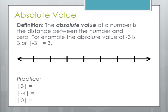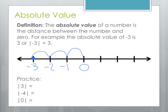Now let's introduce the concept of absolute value. Absolute value is the distance a number is from 0. The absolute value of negative 3 is 3, and we use vertical lines to show the absolute value symbol. If we plot this on the number line at negative 3, and count the distance from 0, that's 1, 2, 3 spaces from 0. So the absolute value of negative 3 is 3.